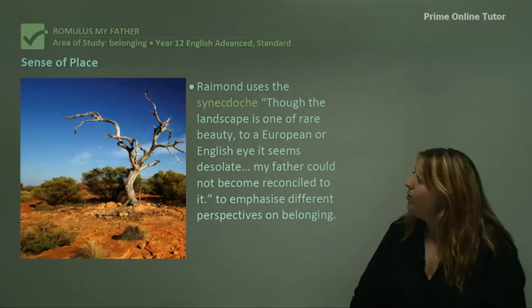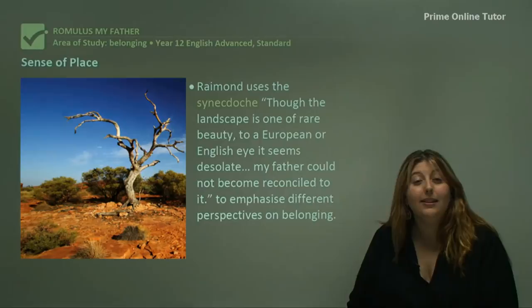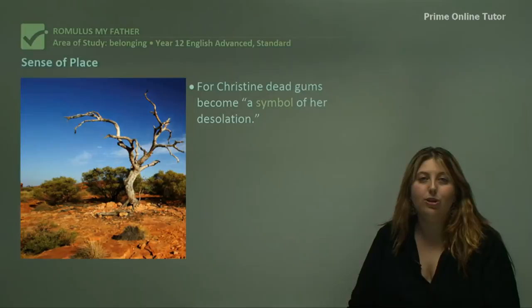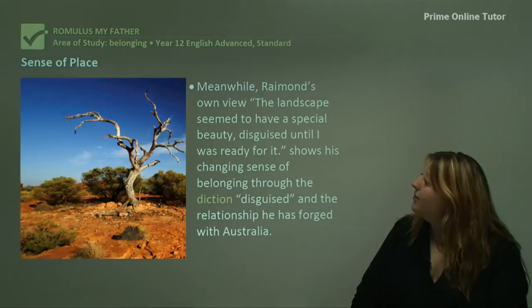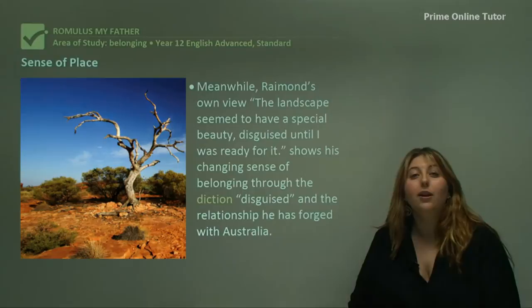Raymond uses the synecdoche: 'Though the landscape is one of rare beauty, to a European eye it seems desolate. My father could not become reconciled to it.' This emphasizes different perspectives on belonging. Romulus always wants to see a European landscape with bright, vivid greens, whereas Raymond comes to understand the landscape for what it is. For Christine, all the dead gums everywhere become a symbol of her desolation, so she too finds it very hard to find a place in the Australian landscape. Meanwhile Raymond's own view — 'the landscape seemed to have a special beauty, disguised until I was ready for it' — shows his changing sense of belonging through the diction 'disguised', reflecting how his relationship with Australia changes to that of someone who considers himself truly Australian.